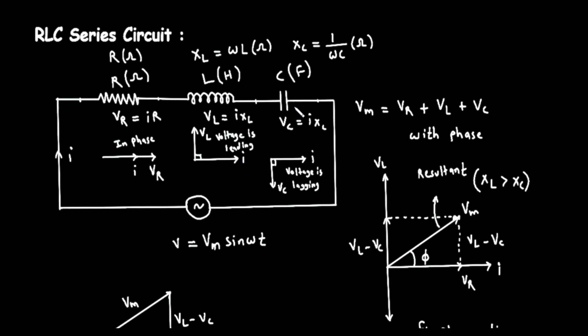The third and final component is the capacitor, labeled with a C. It's shown as two parallel lines. Its property is capacitance, measured in farads, or F. A capacitor also opposes the flow of alternating current, and this opposition is called capacitive reactance, labeled as X sub C. The formula for this is at the top, X sub C equals 1 divided by the quantity omega times C. Again, this is measured in Ohms.